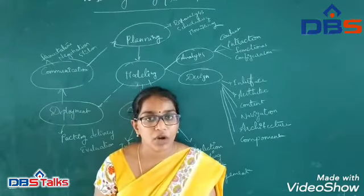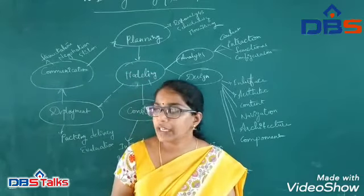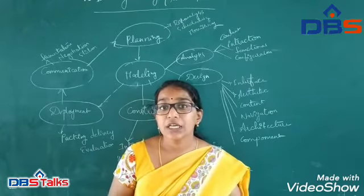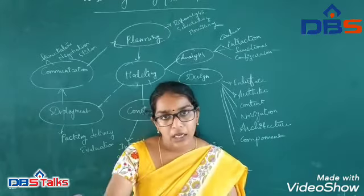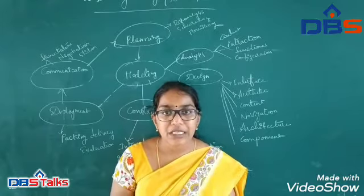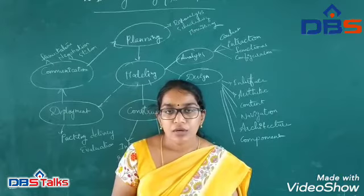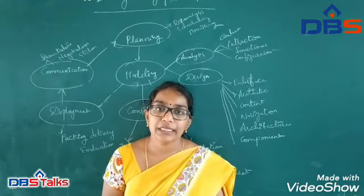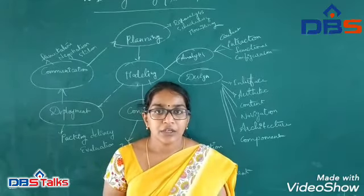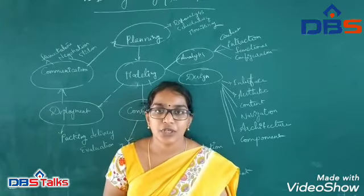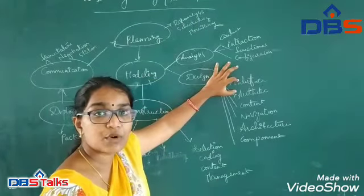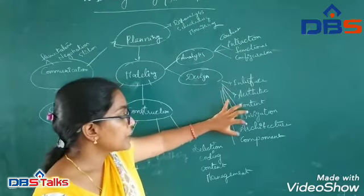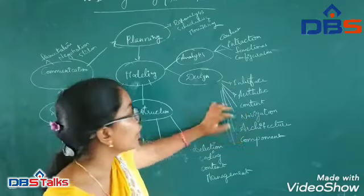For example, taking Facebook Messenger as a web application — the requirements include: a platform to run, a camera for video calls, and a speaker to talk. These are the requirements. The designing phase checks whether the interface is properly working, whether the aesthetic works, whether it is content-based, and how to navigate the software. Based on the architecture and components, we design that particular software.